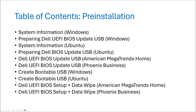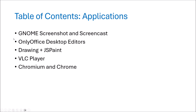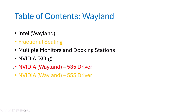Then I'm going to look at creating a bootable USB on both Windows and Ubuntu, and then look at the Dell UEFI BIOS setup and performing a data wipe on both BIOS sub-versions. We'll then look at booting from the USB, installing Ubuntu, software updates, firmware, and the Linux vendor firmware service. Next, I'll cover Linux applications such as screenshot and screencast, OnlyOffice desktop editors, a Microsoft Paint equivalent, a media player, and browsers.